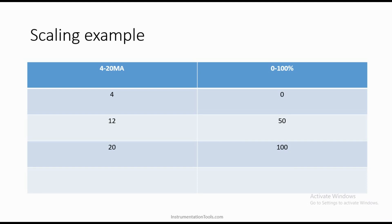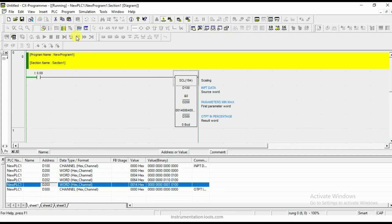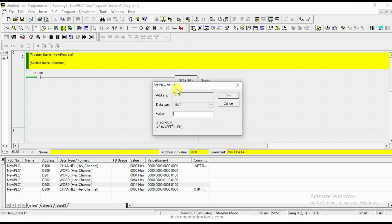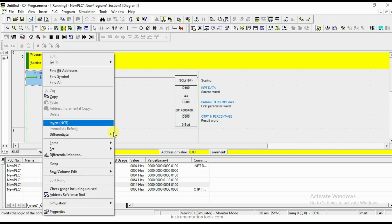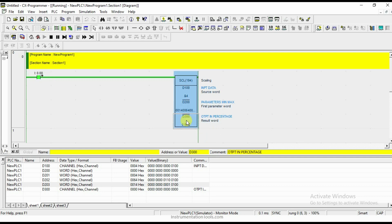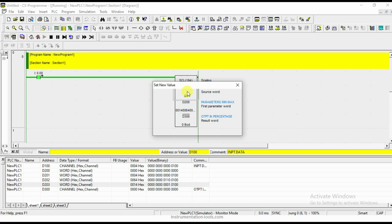Now the conversion is 4 to 20 milliamps to 0 to 100 percent. If the level transmitter is giving 4 milliamps, that means there is no water inside — that is 0 percent water. If the level transmitter is giving 20 milliamps, then there is 100 percent output. In between, 50 percent means half the water tank. So I will apply the input condition of 4 milliamps and check whether we get the correct output.